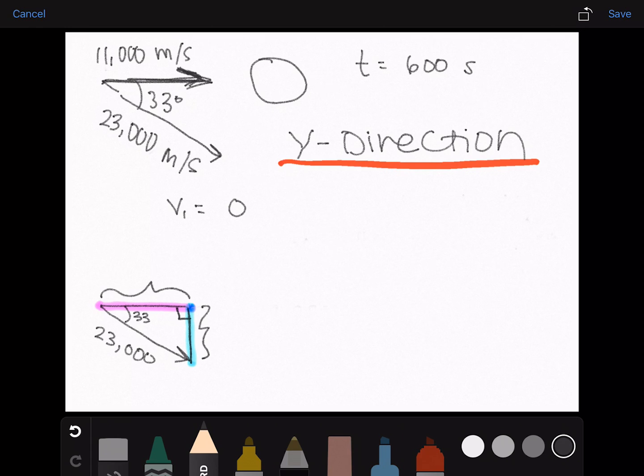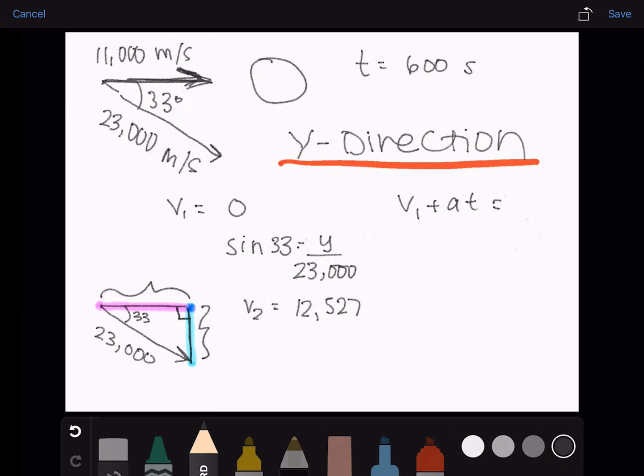We can solve for that using trig as well. And we will use sine of 33 equals opposite over hypotenuse. So y or v2 in the y direction will equal 12,527. And we'll use the same equation, v1 plus at equals v2.